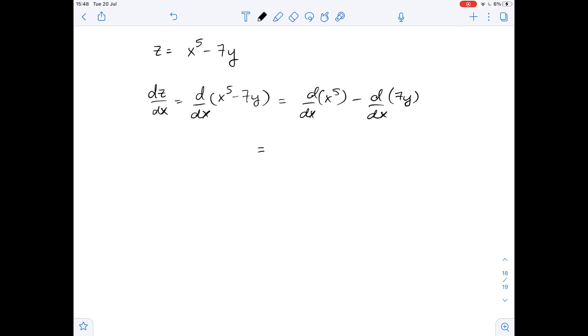Let's simplify it. We will use the power rule for derivatives, which states that the derivative of x^n equals n times x^(n-1). So the derivative of x^5 with respect to x equals 5 times x^4.